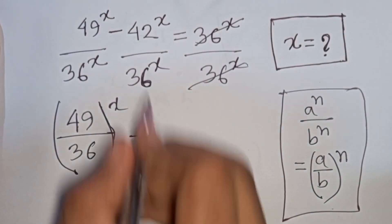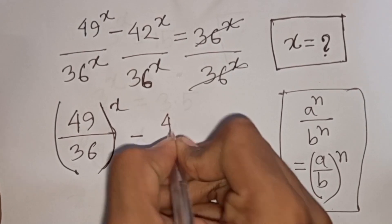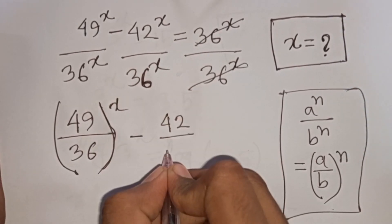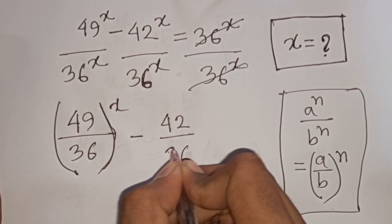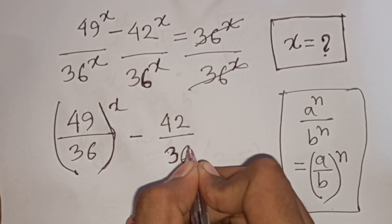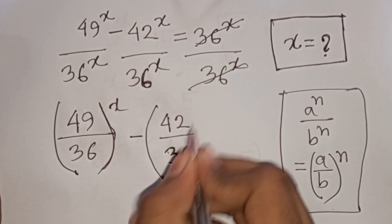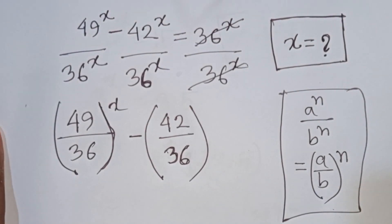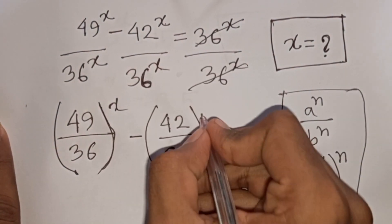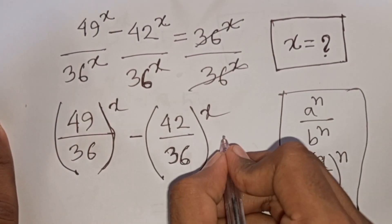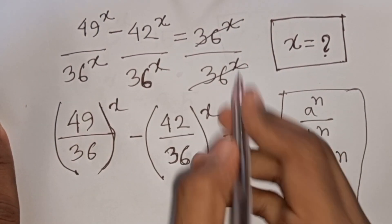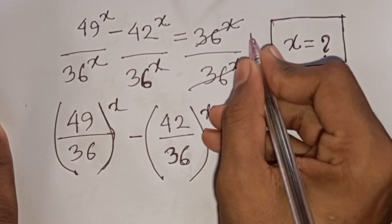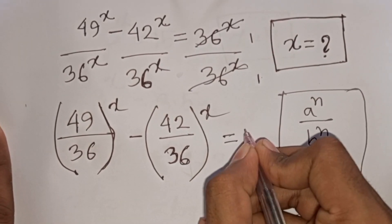So according to this formula, we can write here (42/36)^x equals 1, since 1 divided by 1 equals 1.